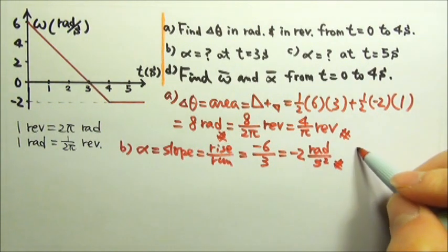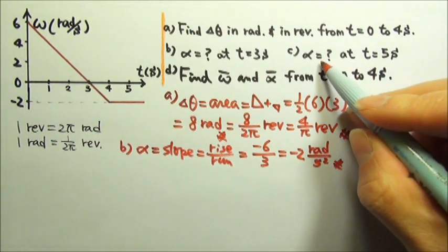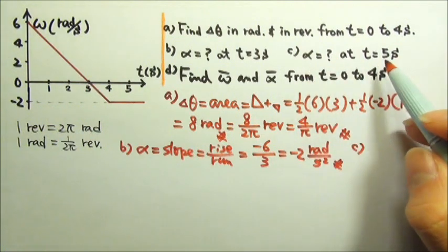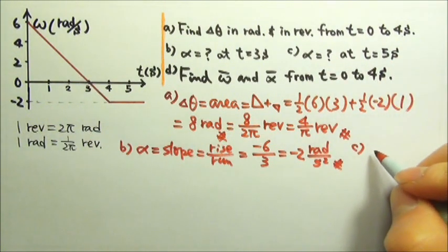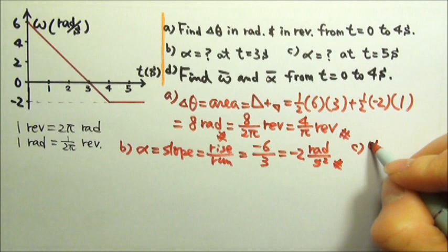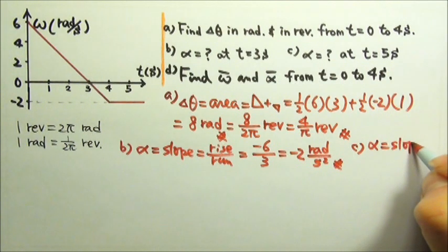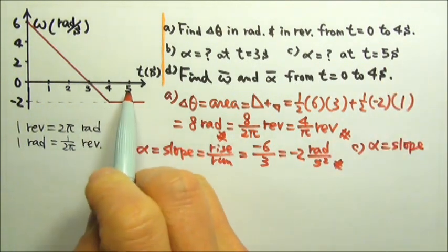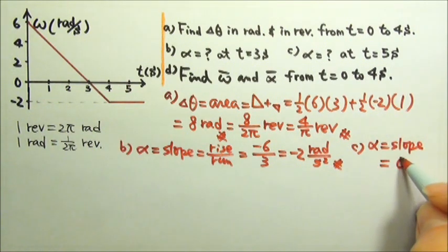Part C: the instantaneous angular acceleration also equals the slope. At t equals five seconds, the slope is zero, so the angular acceleration is zero radians per second squared.